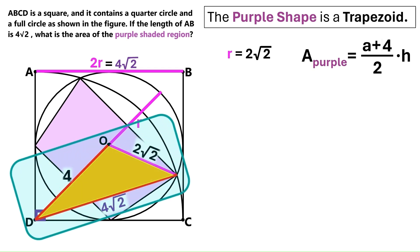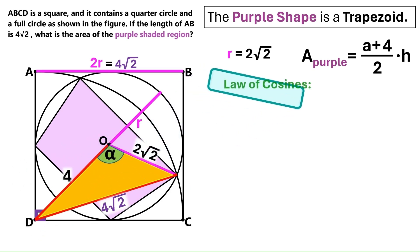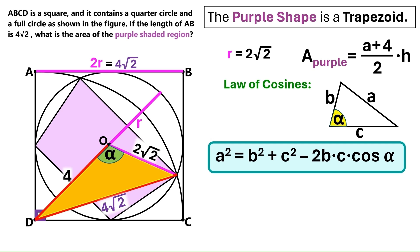Now we've got this absolutely crazy triangle here, and we're gonna label this angle alpha. Next, I'm gonna show you an amazing trick formula called the law of cosines. Let's say we have a triangle like this.